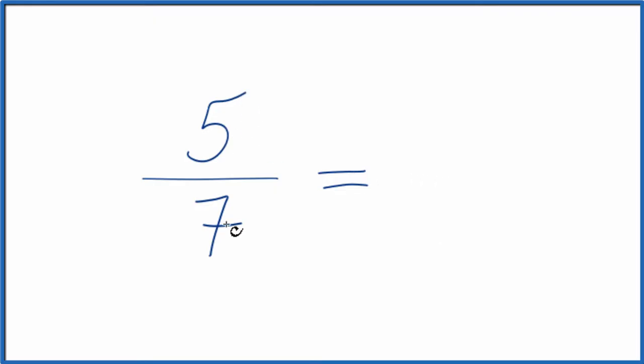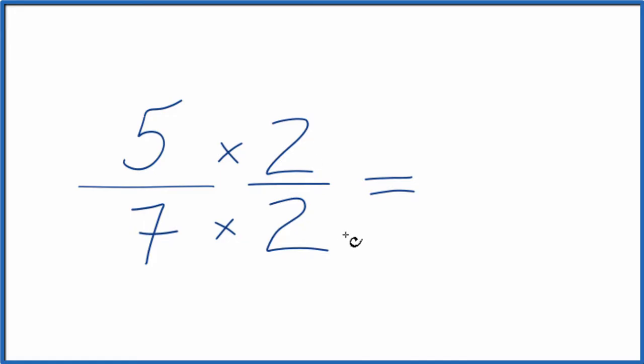We could multiply 5/7 by 1, but that would just give us 5/7 again. How about we multiply it by 2/2? 2/2 is still 1. We're multiplying by 1, so we don't change the value, just the numerator and denominator. 5 times 2 is 10, and 7 times 2 is 14.